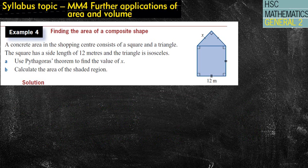So, first example, a concrete area in the shopping centre consists of a square and a triangle. As you can see, the square has a side length of 12 meters. And the triangle is an isosceles, which means, as you can see by the diagram, those two sides are going to be equal.